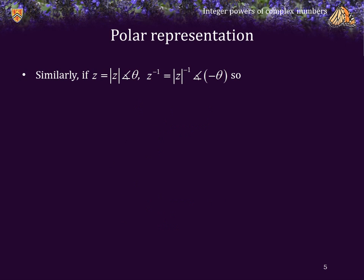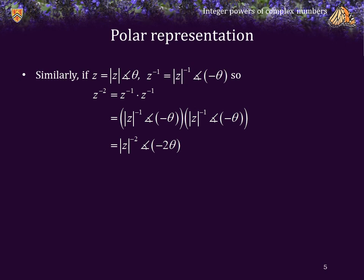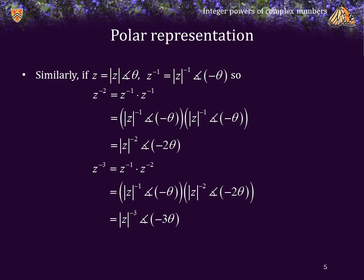Similarly, if z is its magnitude phase theta, its reciprocal is the reciprocal of the magnitude phase negative theta. So if we wanted to calculate z to the power negative 2, that's the reciprocal times the reciprocal. Multiplying the two magnitudes and adding the angles, we get the magnitude raised to the power negative 2 phase negative 2 theta. The same for z to the negative 3: the result is the magnitude raised to the power negative 3 phase negative 3 theta.